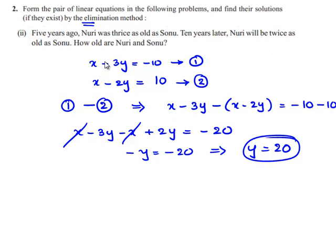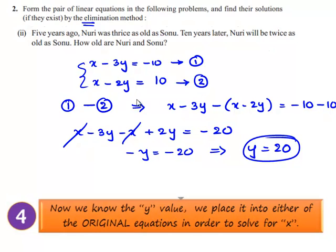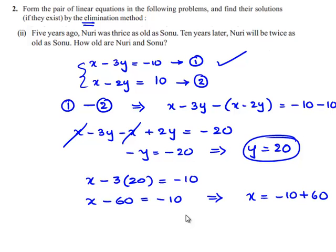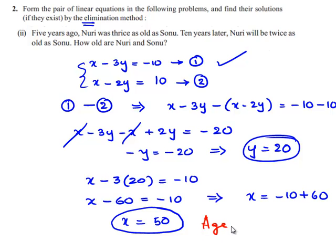Now let us substitute the value of y in equation number 1. x minus 3 times 20 is equal to minus 10, so x minus 60 is equal to minus 10, which gives x is equal to minus 10 plus 60, that is x equals 50. Therefore, the age of Nuri is 50 years and the age of Sonu is 20 years.